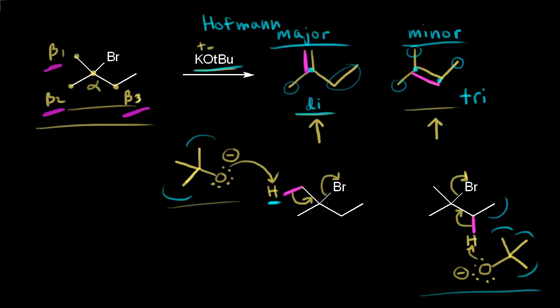Pay close attention to what base is used in an E2 mechanism. If you're using an unhindered strong base like sodium ethoxide, the major product is the Zaitsev product — the more substituted alkene. But if you're using a sterically hindered base like potassium tert-butoxide, the Hoffman product — the less-substituted alkene — is the major product.